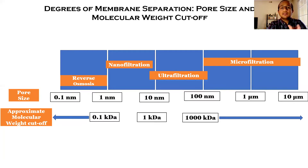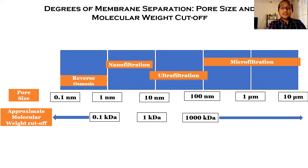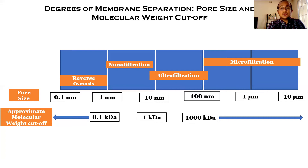The final type of membrane is microfiltration, with pore sizes ranging from 100 nanometers to five to ten micrometers. These membranes can provide a molecular weight cutoff of greater than 1000 kilo Dalton, and are generally used to remove larger colloids and suspended and aggregated particles from the feed water.